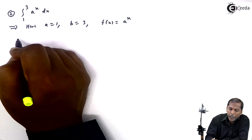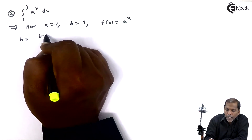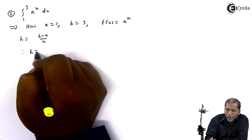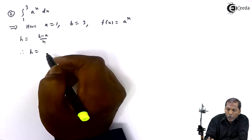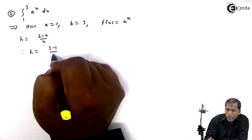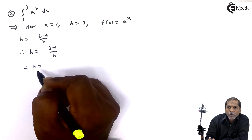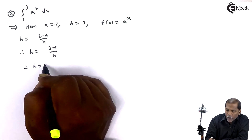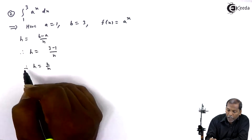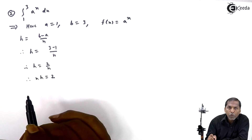We will write the formula h equals (b minus a) upon n. Therefore, h equals (3 minus 1) upon n, which gives h equals 2 upon n. We can write nh equals 2.